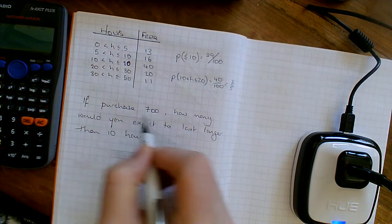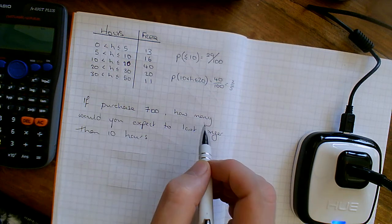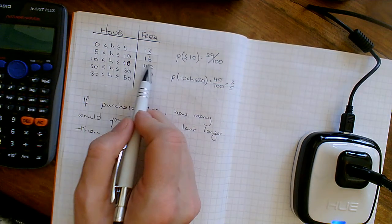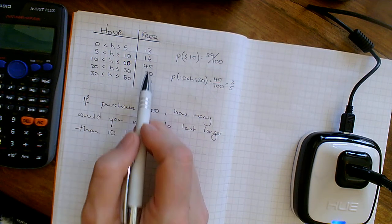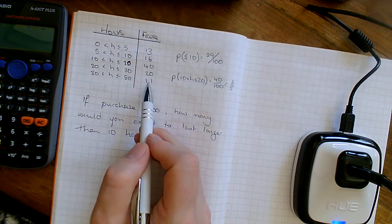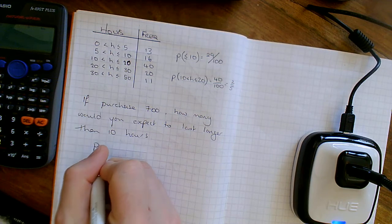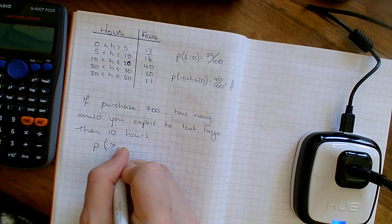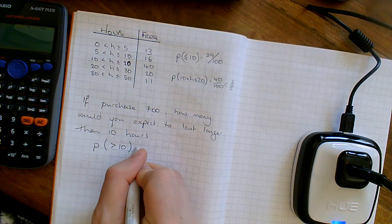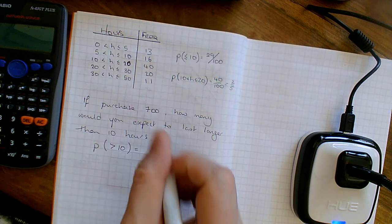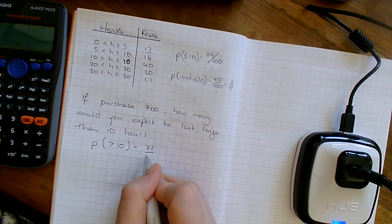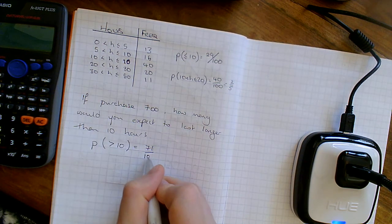Right, the next one. If you purchase 700, how many would you expect to last longer than 10 hours? So longer than 10 hours is this set here. So that's 40, 60, 71. So the probability that it's more than 10 hours. More than 10. I'm getting, as I said, it was 40, 50, 60, 71 out of the 100 that we had there.